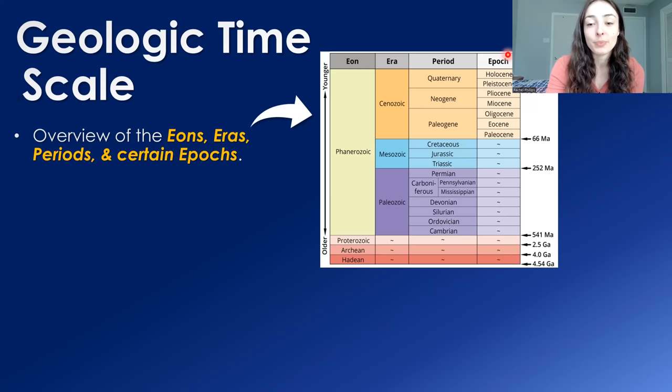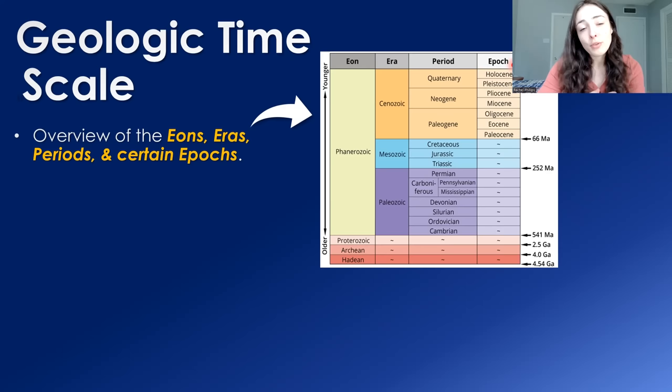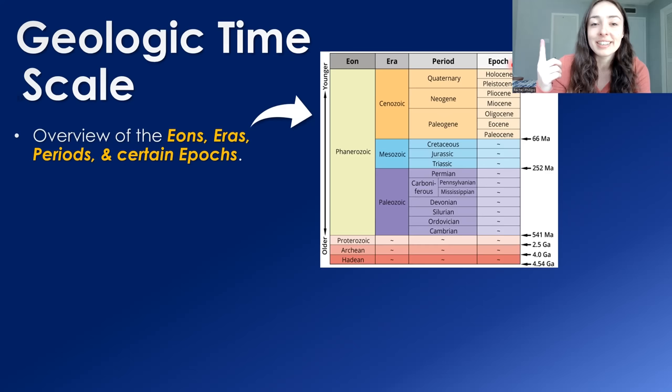The epochs you typically need to know for a geology class are those associated with the Cenozoic era, because that's the most recent and we have the most complete record. These include the Paleocene, Eocene, Oligocene, Miocene, Pliocene, Pleistocene, and Holocene — which is the one we are currently in. If you need to memorize these, check out my geologic timescale song linked in the top right.